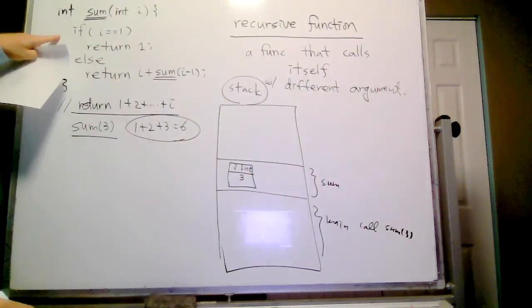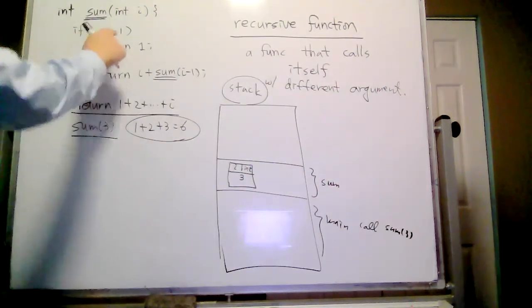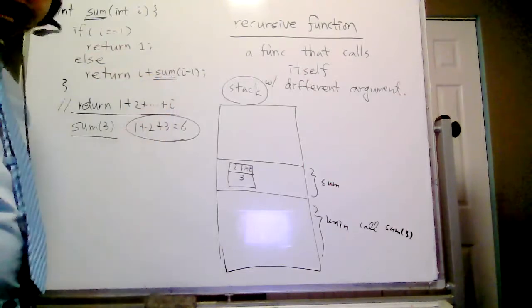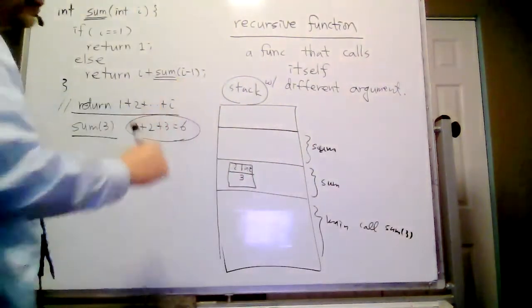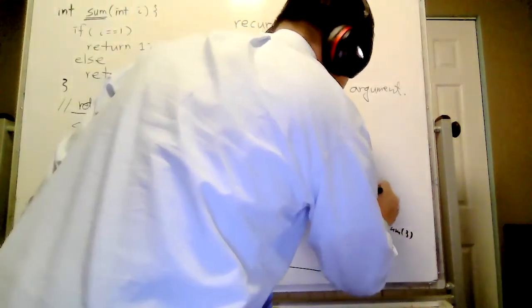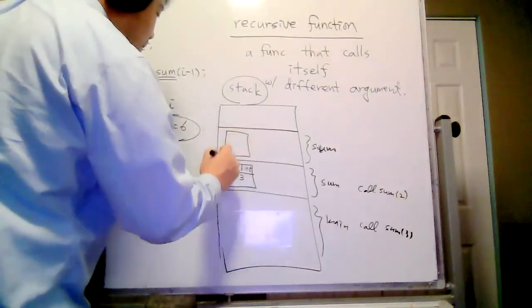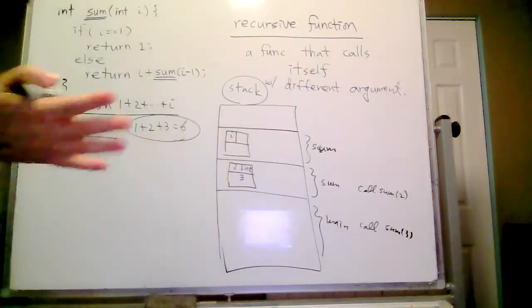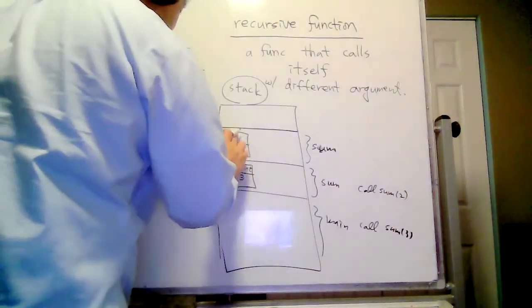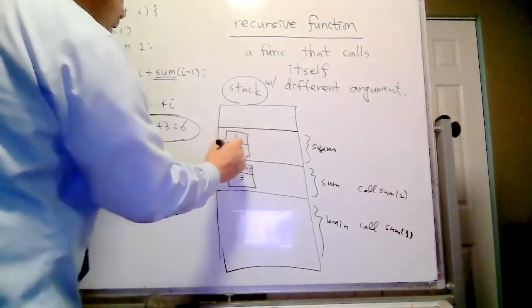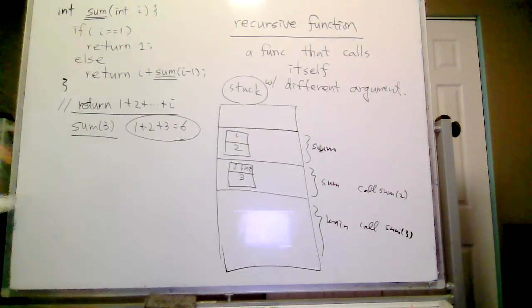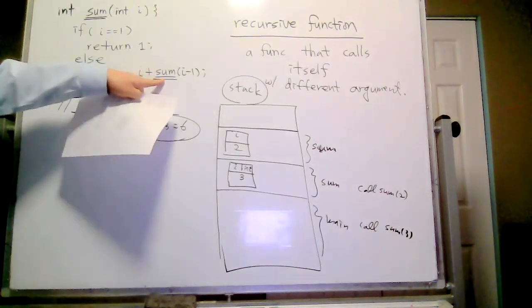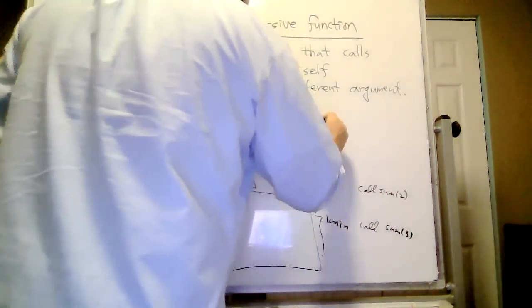Now control is here. Because i is not one, it will call sum again. Another stack frame is set up for the sum function. Because i is three, it will call sum(2). Remember, this i and this i are different — they are different stack frames. So this i is an integer, and it is two. Because i is not one, you go to else and call again. For each sum call, a new stack frame is established.